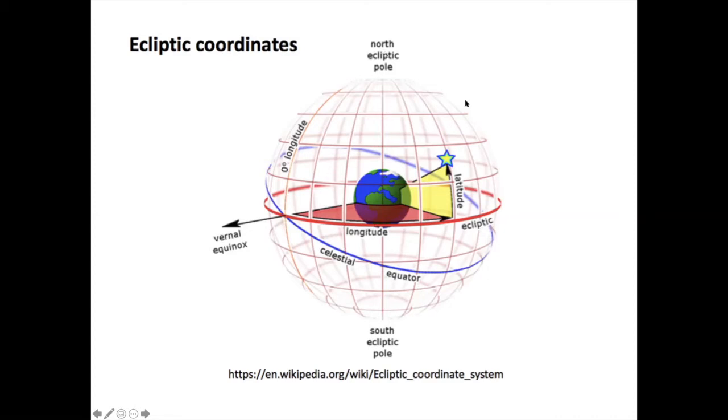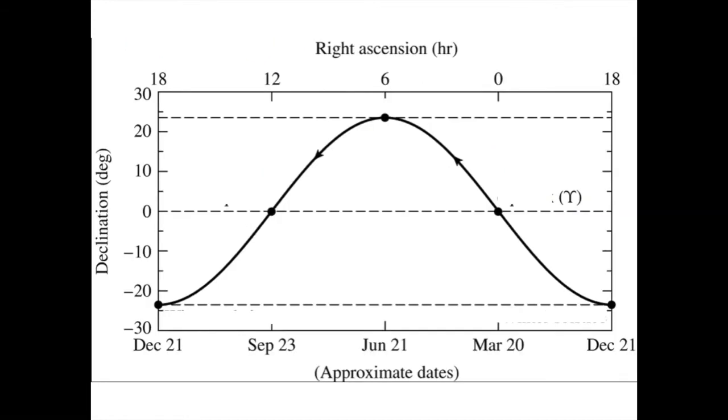As you can imagine, ecliptic coordinates are very useful for solar system studies, where the planets are more or less on the same plane. They're near the plane of the ecliptic, so this coordinate system is going to be very useful for solar system studies.